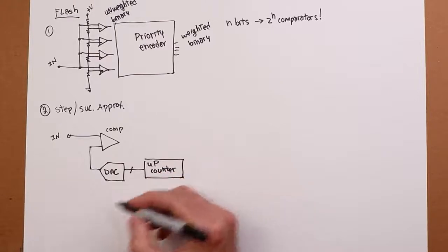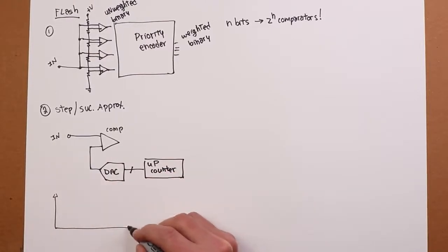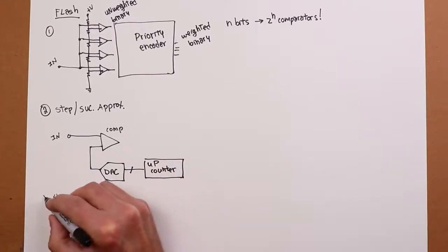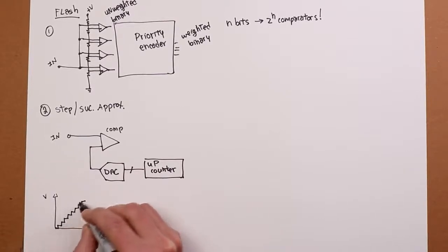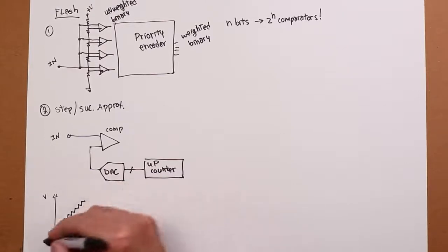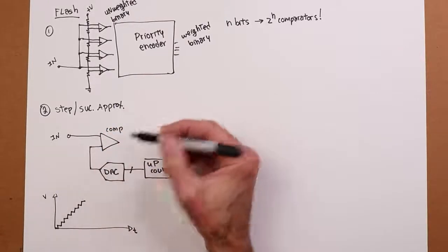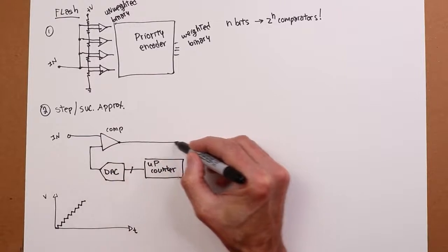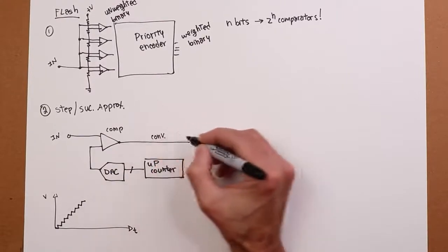Now what'll end up happening is, you'll wind up with the output of the DAC looks like this. As the counter goes 0, 1, 2, 3, you're going to get the stair step coming up. At some point, this is going to overtake whatever the input signal is. The comparator is going to change state.